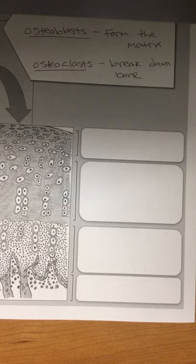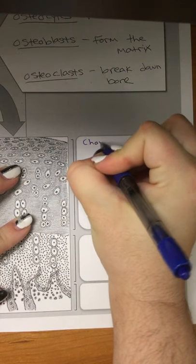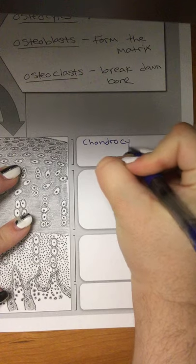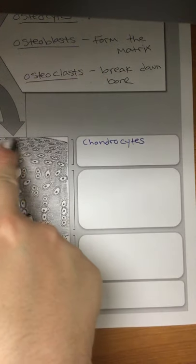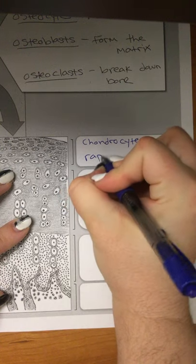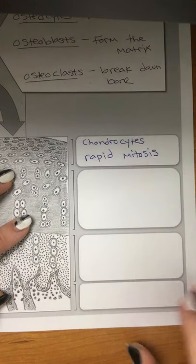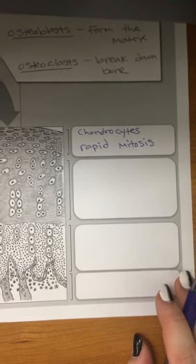This first part is actually cartilage, which is made by chondrocytes. Chondrocytes make cartilage, and in this area, this is in the growth plate area. They're doing mitosis like crazy, making all kinds of new cartilage cells.